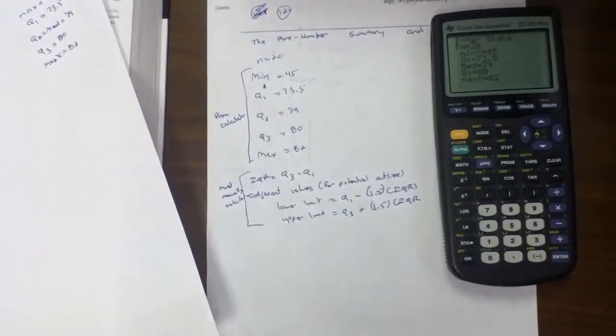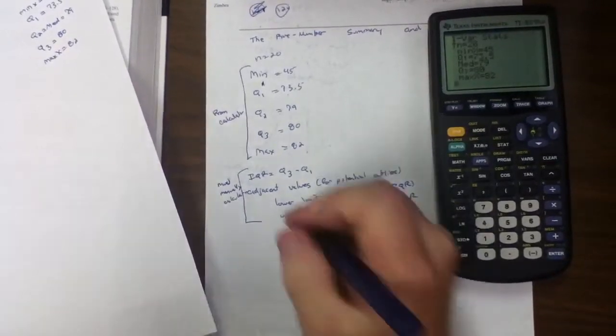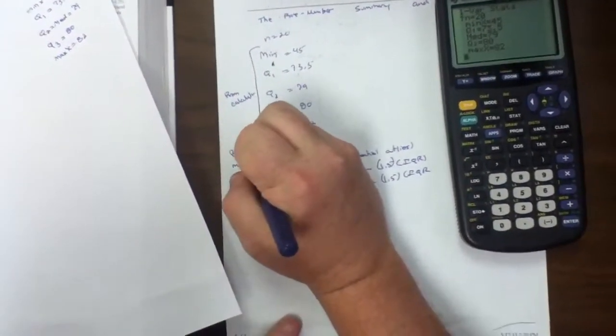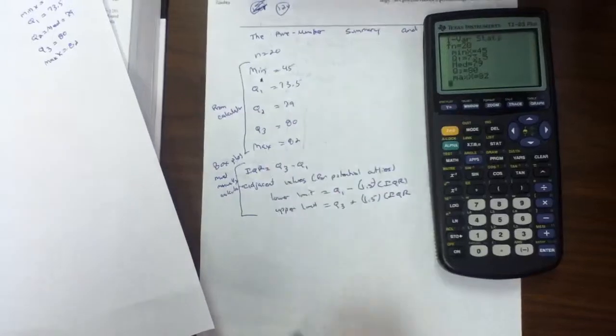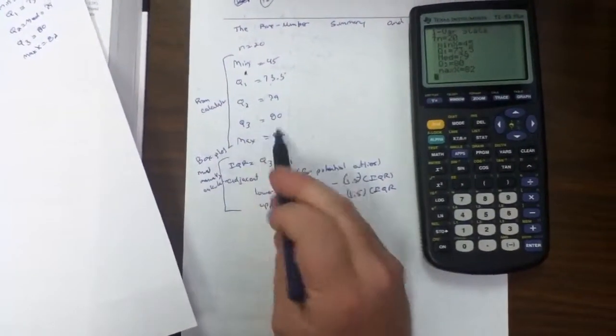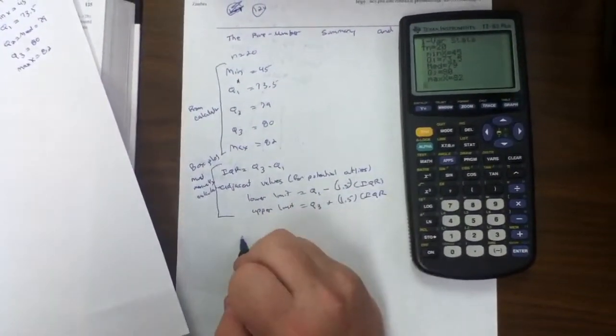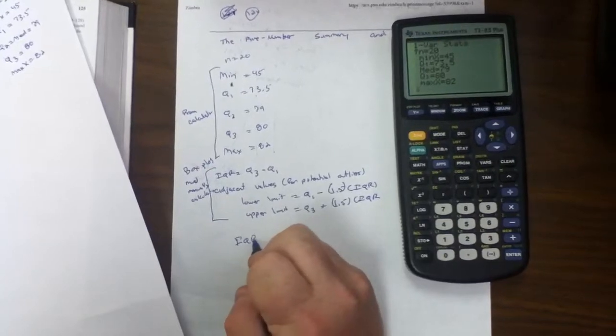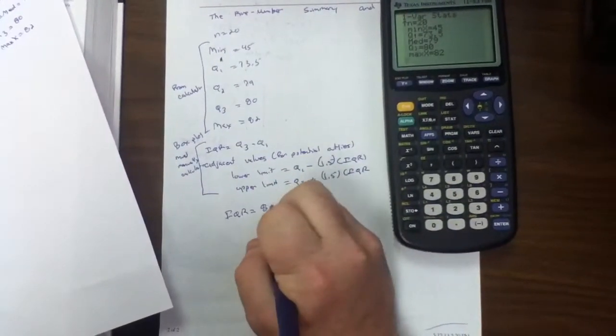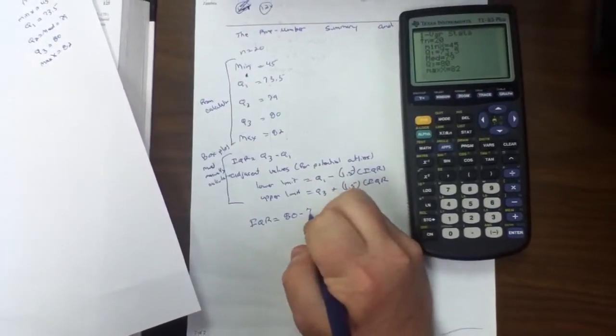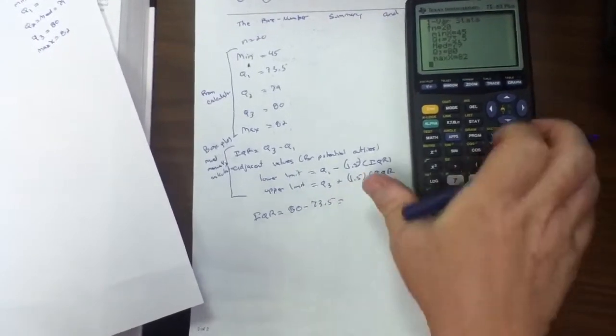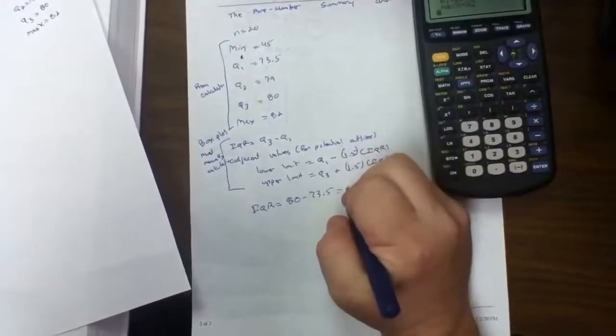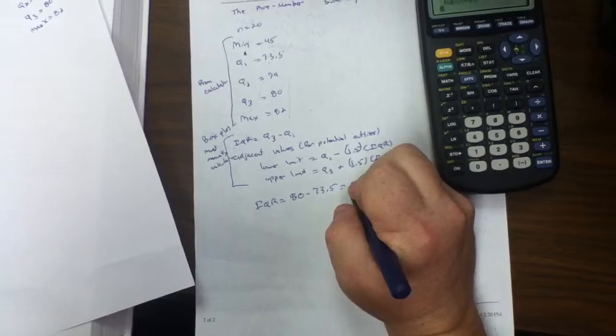Now, from this, there are additional values we need to do the box plot. One's called the IQR. The IQR is simply Q3 minus Q1. So to find IQR in this problem, we take Q3, which is 80, minus Q1, which is 73.5. That equals 6.5.